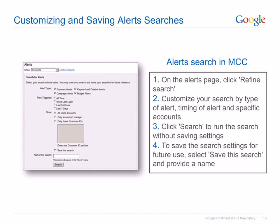In order to run and save searches for MCC alerts: 1. On the alerts page, click the link Refine Search to reveal available search options. 2. Customize your search by type of alert — for payments alerts, campaign alerts, keywords and creative alerts, and budget alerts — by timing of alert from the Time Triggered menu, and by accounts you want to search: all accounts, only accounts you directly manage, or individual accounts.